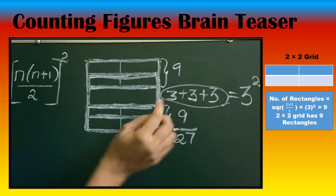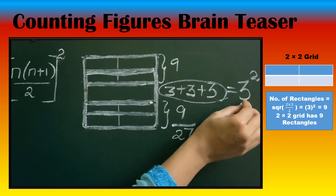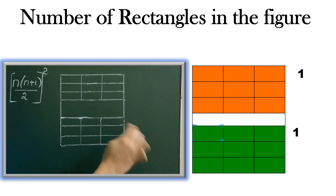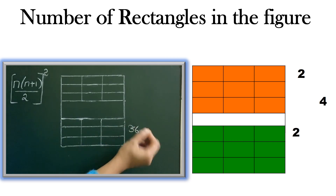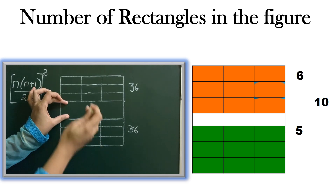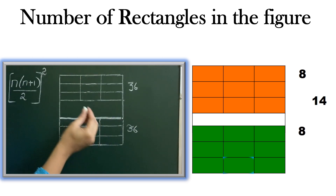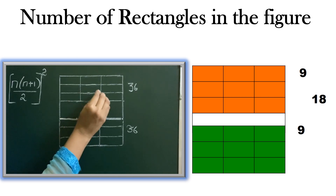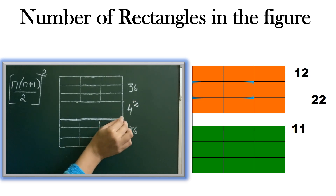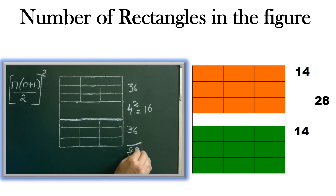Applying this to a figure where the lower part is a 3 into 3 grid (36 rectangles) and the upper part is also a 3 into 3 grid (36 rectangles): count the parallel lines above the joining line — there are 4 parallel lines. So do 4 squared, which is 16. Total rectangles: 36 plus 16 plus 36 equals 88 rectangles in this figure.